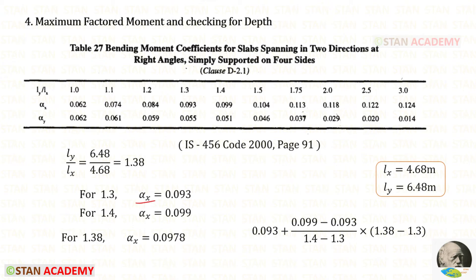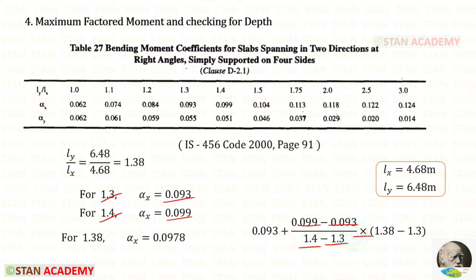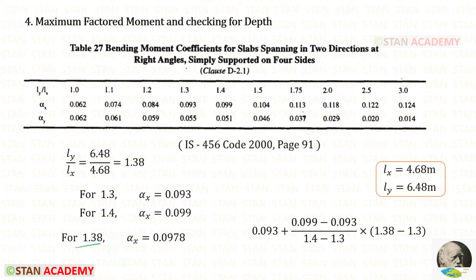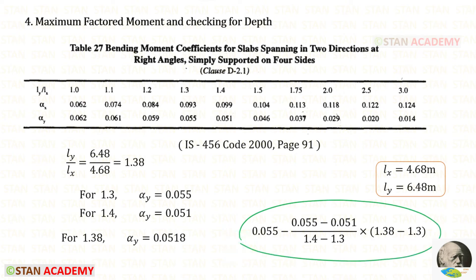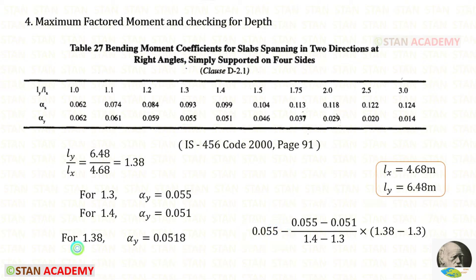For αx: at 1.3 it is 0.093 and at 1.4 it is 0.099. Interpolating for 1.38: αx = 0.093 + (0.099 − 0.093)/(1.4 − 1.3) × (1.38 − 1.3) = 0.0978. For αy, the values are decreasing, so using a negative sign in interpolation, αy for 1.38 = 0.0518.